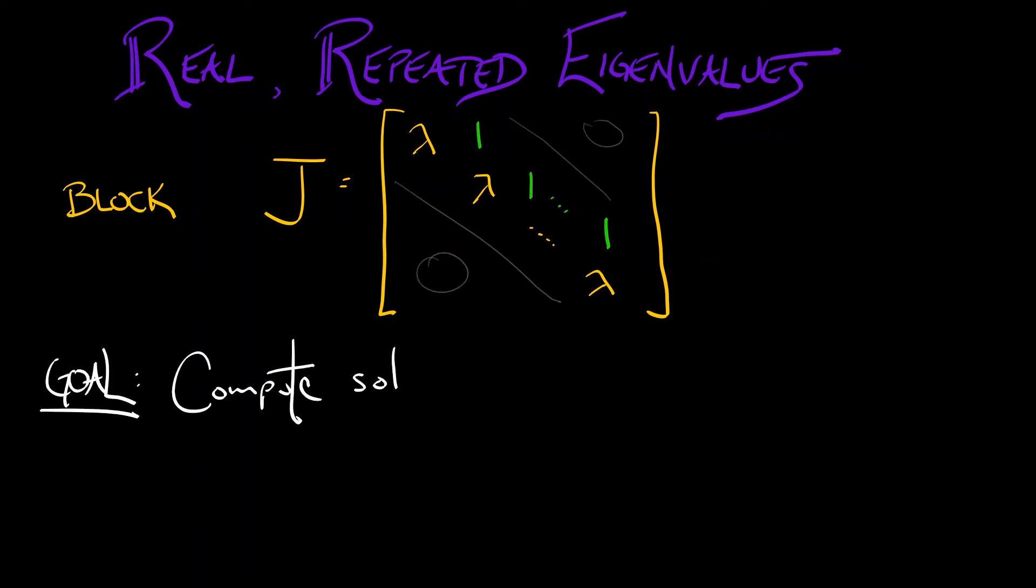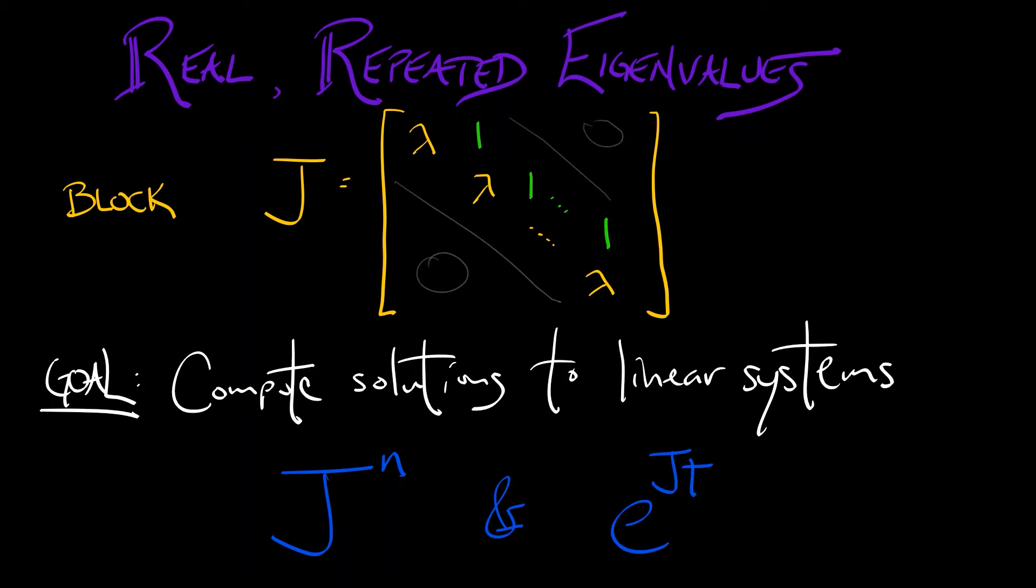Now, our goal in solving linear systems is to compute powers of this J and to exponentiate this matrix, to compute e to the JT. Because of the block diagonal structure, we can work one block at a time. Let's begin with a lemma about taking powers of such a block J. J to the nth is the following K by K matrix.